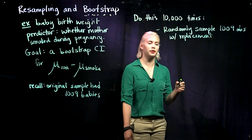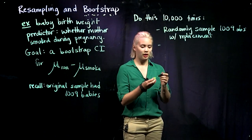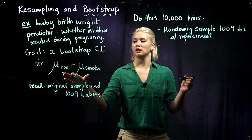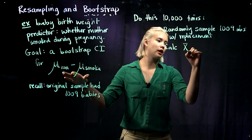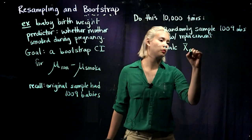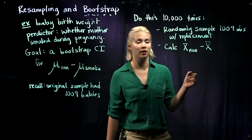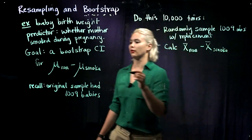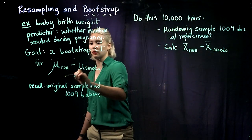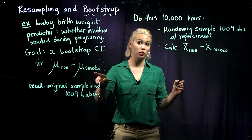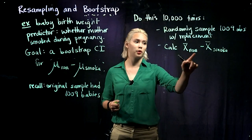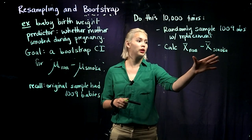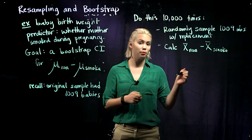Using that resample, we're going to calculate x̄ for the babies whose mothers did not smoke minus x̄ for the babies whose mothers did smoke during pregnancy. Because if we're trying to get a confidence interval and a bootstrap distribution for μ_non minus μ_smoke, we know that our point estimator is x̄_non minus x̄_smoke. So we need to be calculating this difference in means over and over.